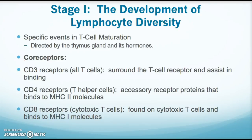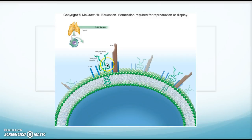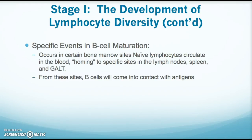We'll start with events in T cell maturation — remember this happens in the thymus. All T cells will have CD3 receptors, which assist in binding. We also have CD4 receptors on T helper cells; these bind to MHC 2 molecules to recognize presented antigens. CD8 receptors are only found on cytotoxic T cells and bind to the MHC 1 molecule. I have a good diagram showing the antigen binding site and how CD4 helps in binding to an antigen-presenting molecule.